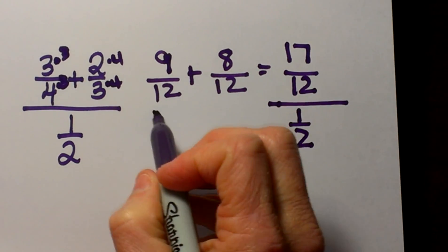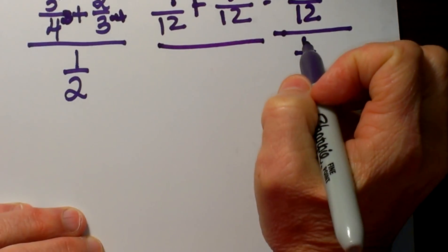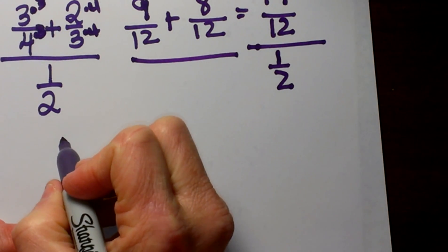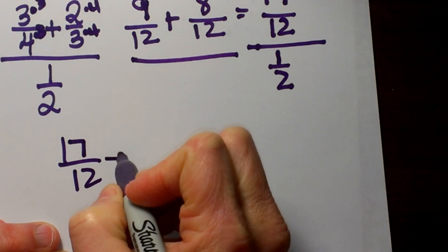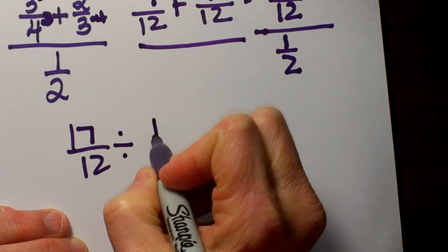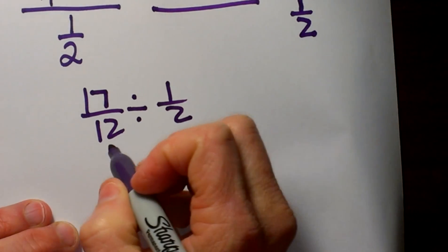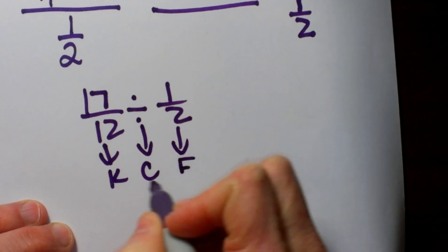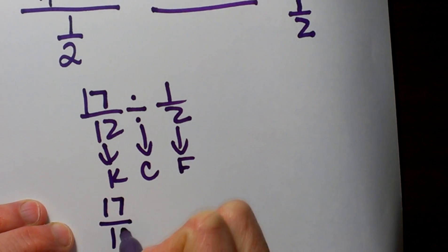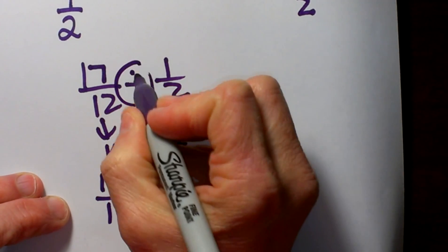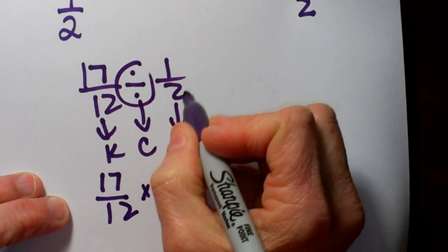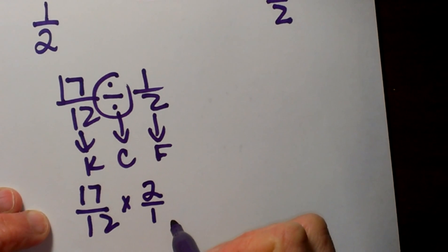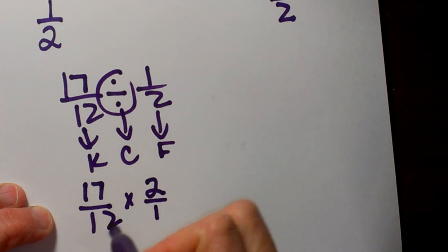Now I can rewrite this from a hamburger to a hot dog — a long, thin expression. So I bring that down as 17 twelfths divided by one half. Now I am going to use my keep it, change it, and flip it rules. I keep my first fraction as 17 twelfths, change my division to multiplication, and flip the reciprocal of one half to two over one. Now I can multiply across.